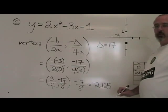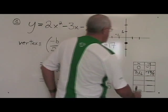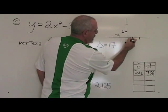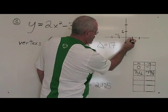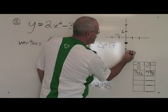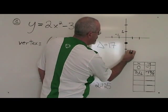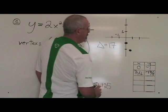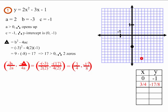Let's graph this. 3 quarters is here. Negative 2.125 is down here. This is our vertex. This is what example 1 looks like after finding the vertex.